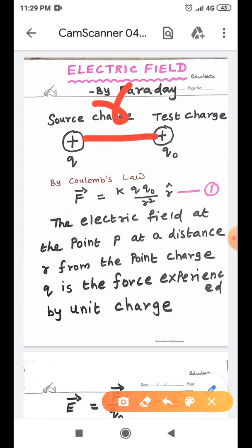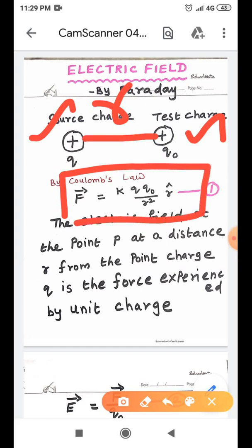And the electrostatic force of repulsion is experienced by the test point charge q0 due to the source point charge q is f vector which is equal to k qq0 divided by r square r cap. Coulomb's law used to be used by the force of repulsion and q0 to be used by the force of repulsion. Let us consider it is equation number one.